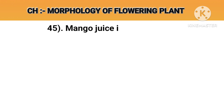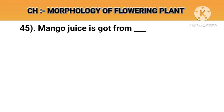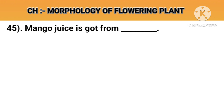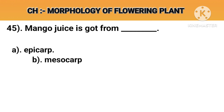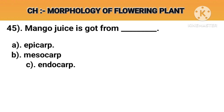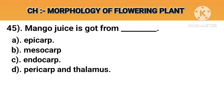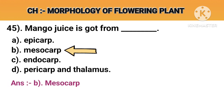Question number 45. Mango juice is got from. Option A: Epicarp. Option B: Mesocarp. Option C: Endocarp. Option D: Pericarp and thalamus. Answer B: Mesocarp.